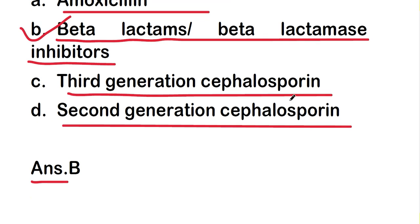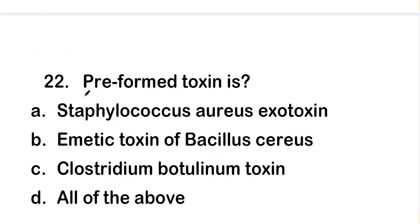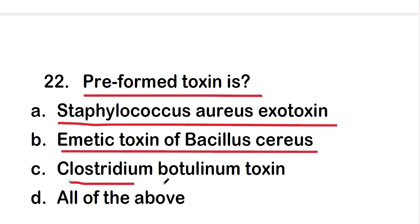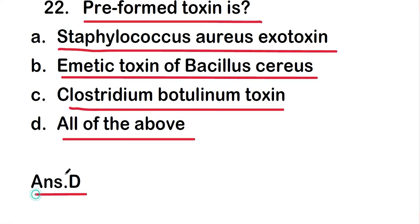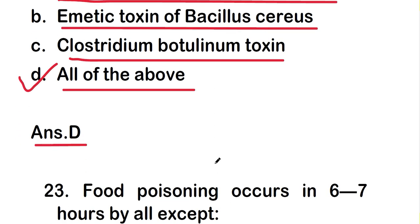The next question: which is a preformed toxin? Options are Staphylococcus aureus exotoxin, emetic toxin of Bacillus cereus, Clostridium botulinum toxin, or all of the above. The right answer is option D — all of the above. All of these are preformed toxins.